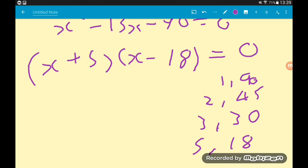From that we get two possible solutions for x. We can get x is minus 5 or x is positive 18. This is a very common thing that happens - we've got two possible values for our letter, but only one of these makes sense.